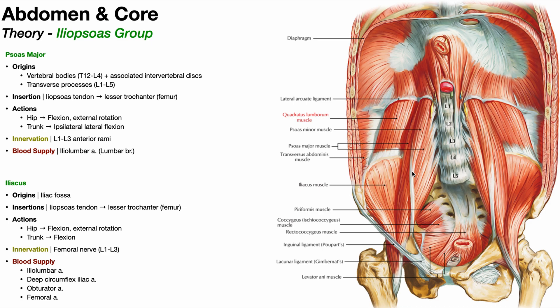In this picture on the right, we have a coronal or frontal section of the abdominal and pelvic cavities with the entire anterior portion removed, showing the posterior abdominal wall. Up here is the diaphragm, which we're not concerned about right now. This thin muscle with a very thin tendon going down — don't get confused, this is not the psoas major. This is actually the psoas minor, which we'll talk about in the next video. It is not an official part of the iliopsoas.